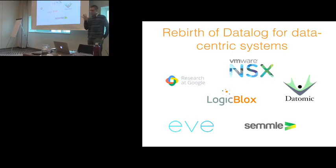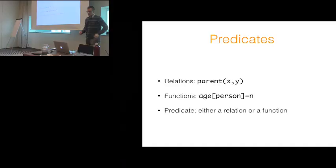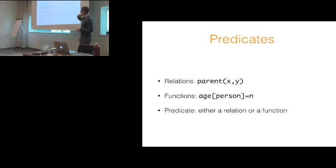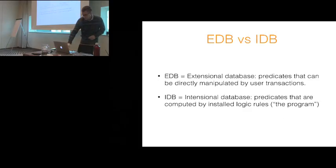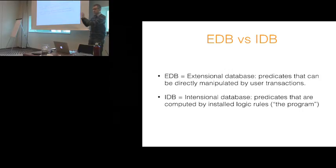We're not alone in using datalog as the center of what we're doing. Other companies — Datomic, VMware, Google Research, Semele Eve — are also working on datalog-based solutions. The basic piece of data in our system is a predicate, which can be either a relation or a function. We use round brackets for relations and square brackets for functions, and collectively refer to these as predicates. We distinguish between two kinds: EDB predicates are the inputs to your program — things you can run a transaction and modify. IDB, or intentional database predicates, are computed by the program; some reflect internal state and others are outputs eventually presented to users.